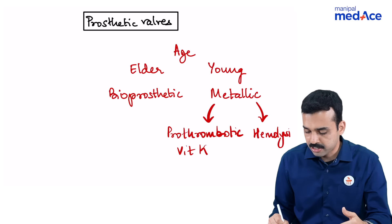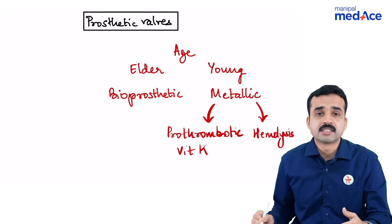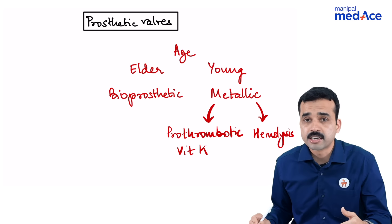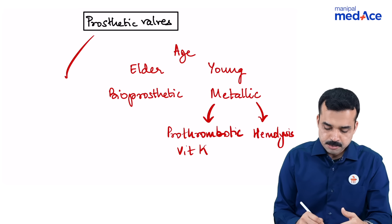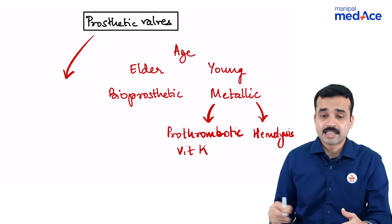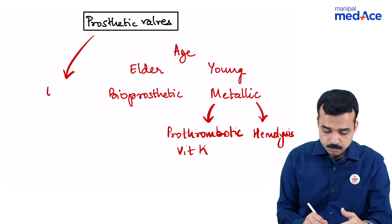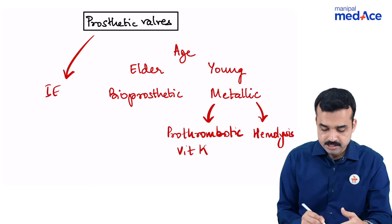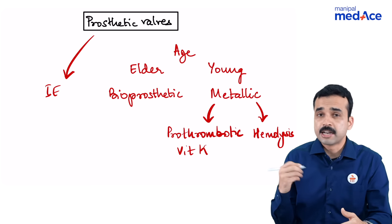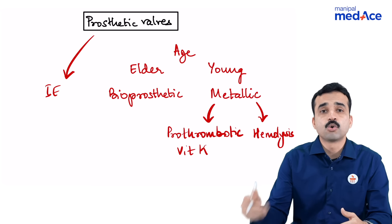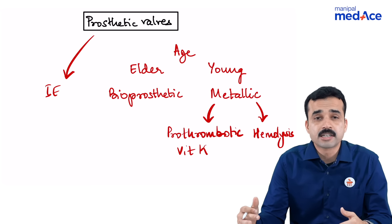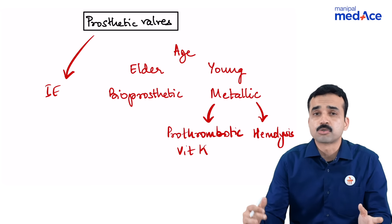Metallic valves also have the additional risk factor of producing hemolysis — a type of mechanical hemolysis leading to hemolytic anemia. The other important aspect with regards to prosthetic valves is that they can predispose to the development of infective endocarditis.